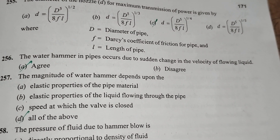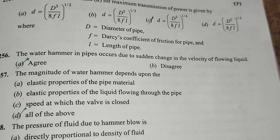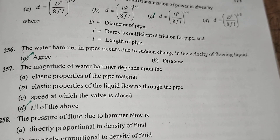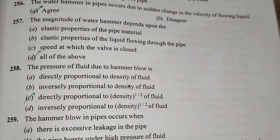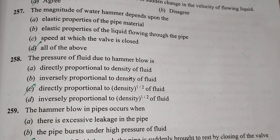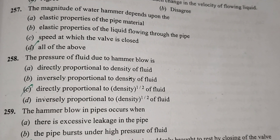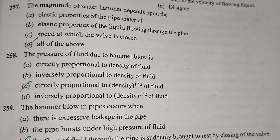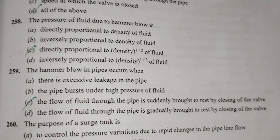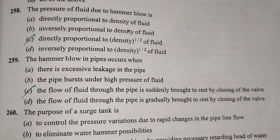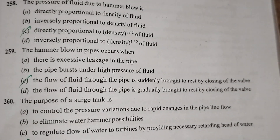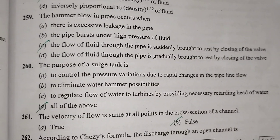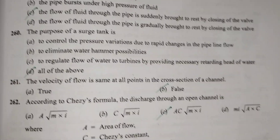Water hammer in a pipe occurs due to sudden change in the velocity of flowing liquid — Disagree. The magnitude of water hammer depends on all of the above factors. The pressure of fluid due to a hammer blow is directly proportional to the density of liquid. A hammer blow in a pipe occurs when the flow of liquid through the pipe is suddenly brought to rest by closing a valve. The purpose of a surge tank is all of the above.